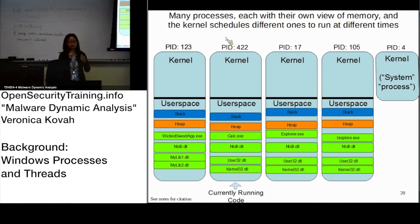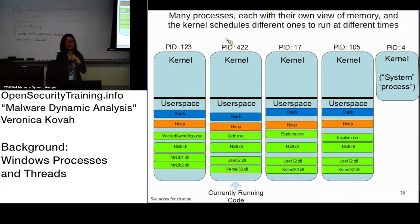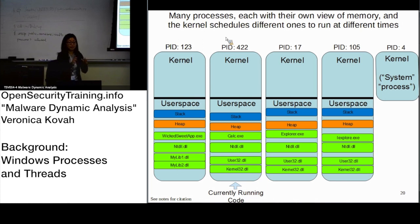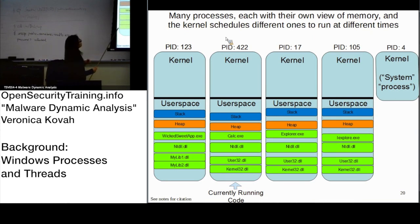In a program there are two types of variables: global and local. Global variables are defined outside the functions and can be accessed from any function in the program. Local variables, on the other hand, are defined inside a function and only that function can access them. The important question then is: where is each type of variable located in the process memory map?